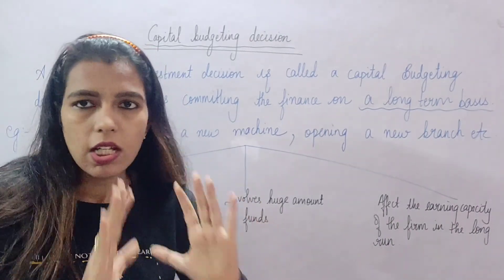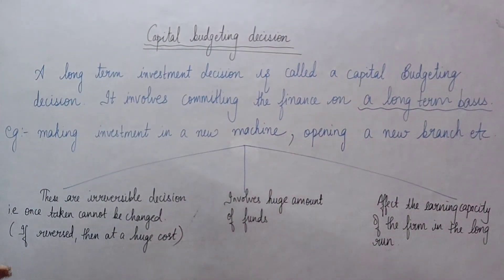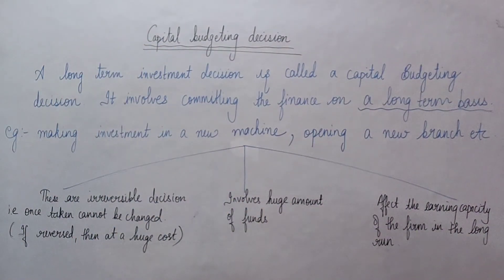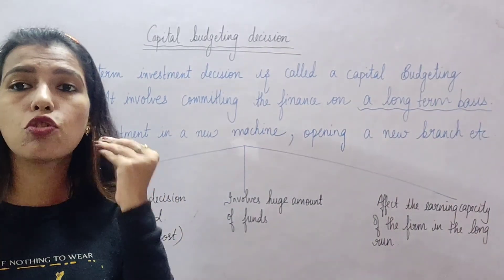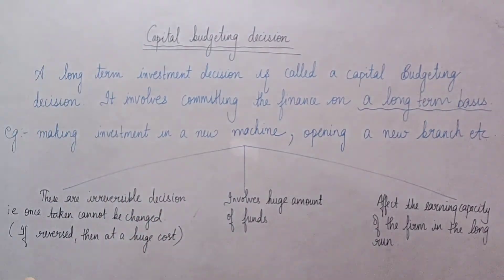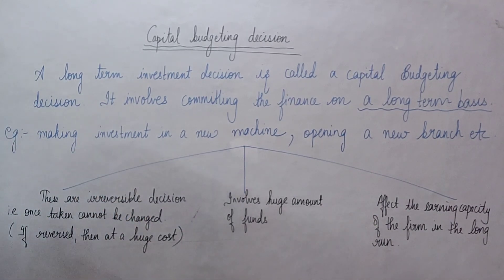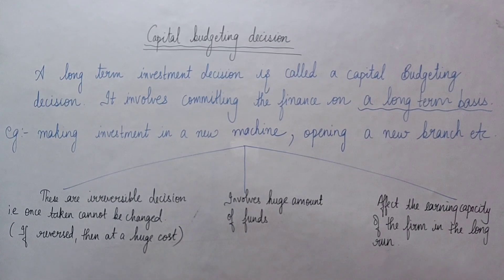When you invest money in fixed assets it gets blocked on a long-term basis — that is your capital budgeting decision. Examples include making investment in a new machine or opening a new branch. Now, why are capital budgeting decisions very crucial for the firm? There are three points from NCRT. First: these are irreversible decisions — once taken, they cannot be changed easily.